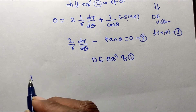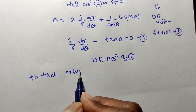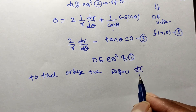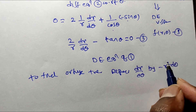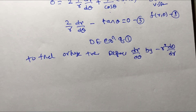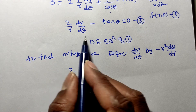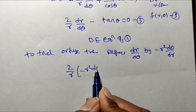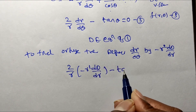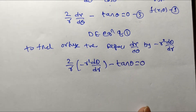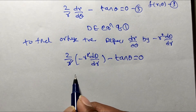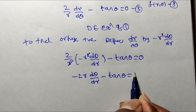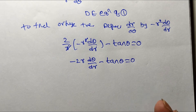To find the orthogonal trajectory, we replace dr/dθ with −r² · dθ/dr. So equation three becomes: 2/r · (−r² · dθ/dr) − tan θ = 0. The r in the denominator and one r from r² cancel, giving: −2r · dθ/dr − tan θ = 0. This is a first-order, first-degree differential equation.